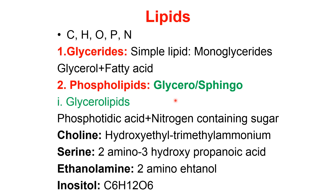Phospholipids are either glycerophospholipids or sphingophospholipids. Glycerophospholipids are made up of phosphatidic acid — a glycerol attached with two fatty acids and a phosphate group, then attached with a nitrogen-containing sugar. The nitrogen-containing sugars in cell membranes are choline, serine, ethanolamine, and inositol. So phospholipids become phosphatidylcholine, phosphatidylserine, phosphatidylethanolamine, or phosphatidylinositol depending on which nitrogenous sugar is attached.